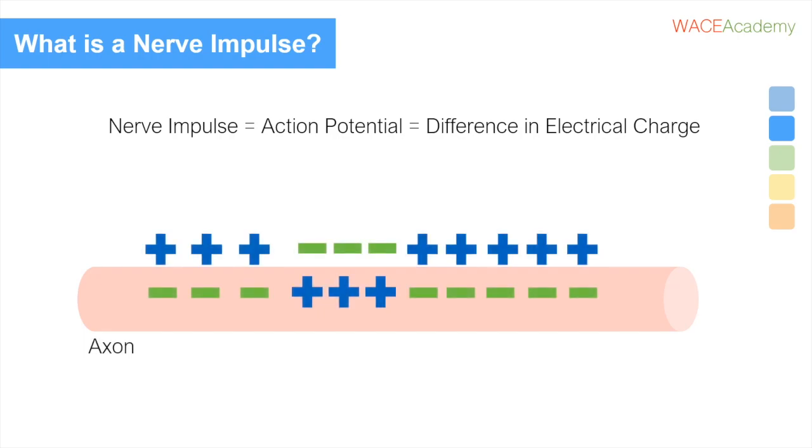There is a difference in charge between the inside and outside of a neuron, similar to a concentration gradient but with charge instead. We can also talk about this difference in terms of polarity. The more different the inside and outside are, the more polar.